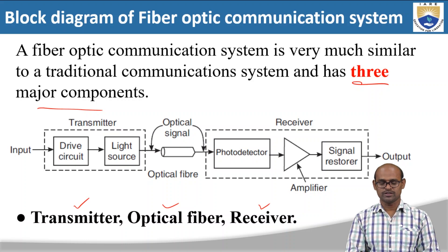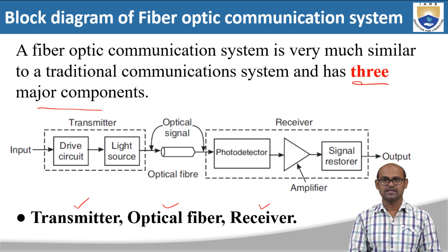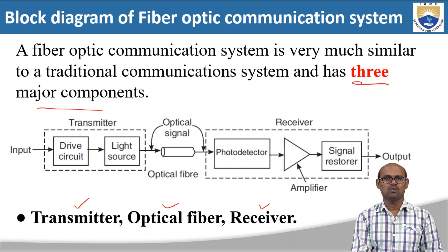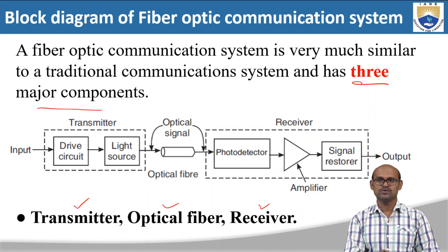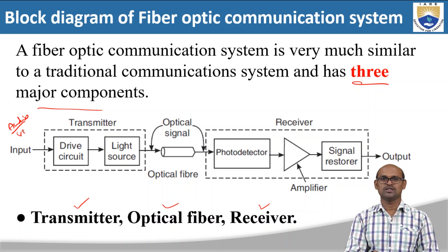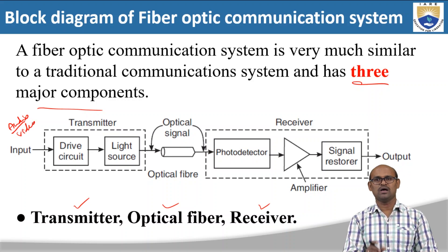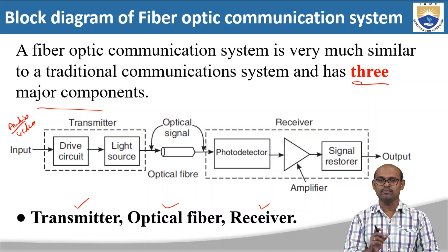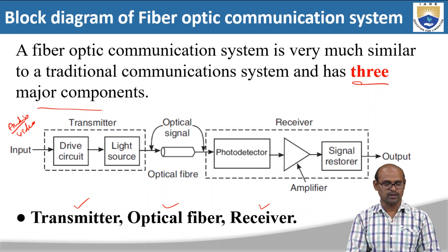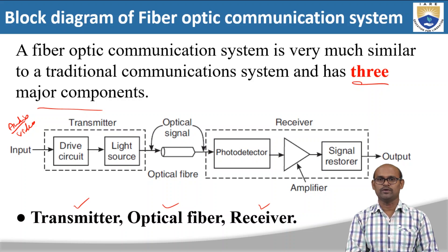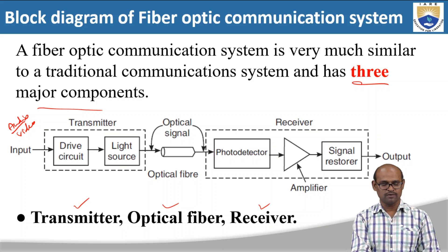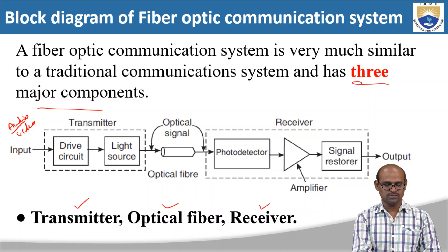The three components are placed as follows in the communication system. First, we launch the input — input is nothing but an audio signal or a video signal. You want to send an audio or video signal to your friend using this optical fiber communication system. The first component: the input signal is given to the transmitter.